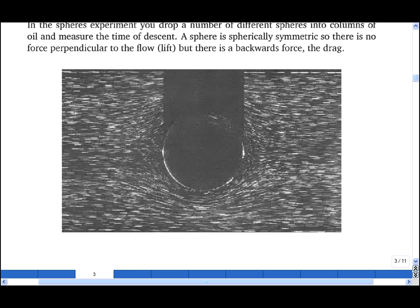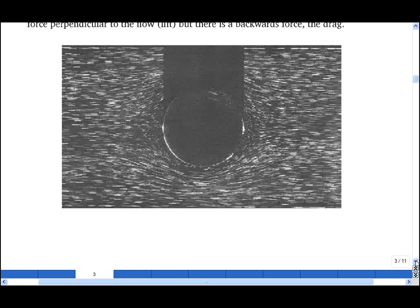This picture, which is taken from Van Dyke's album of fluid motion, shows the pathlines in creeping flow. Now, it looks a little bit like those that you get for inviscid flow, but it's important to point out that the velocity profile is very different. In creeping flow, the flow is like one big boundary layer.